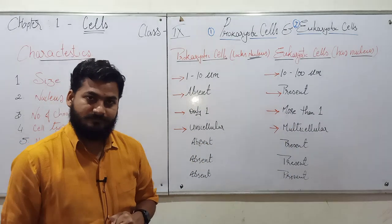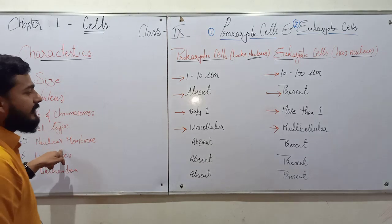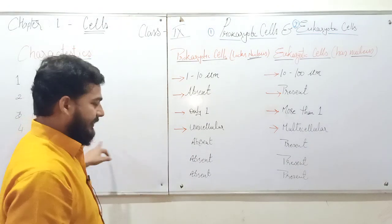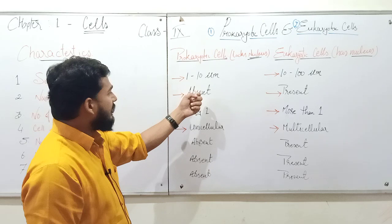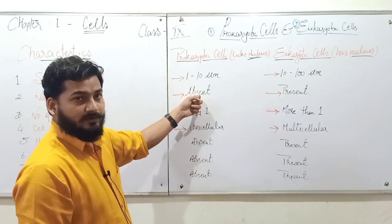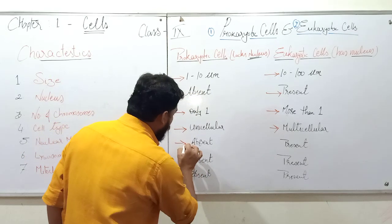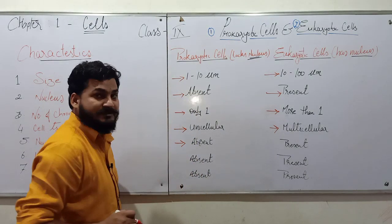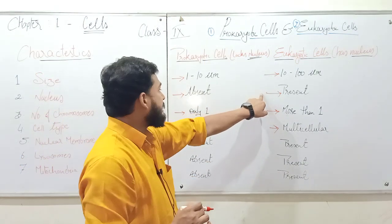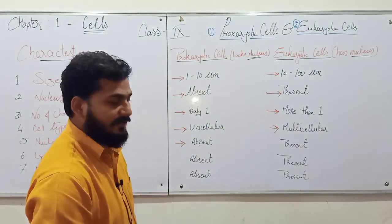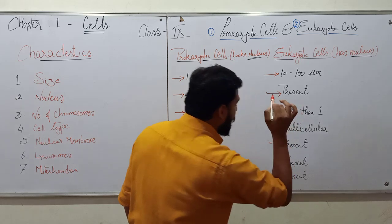Then we talk about nuclear membrane. Since the nucleus is not present or not developed in prokaryotic cells, nuclear membrane will also be absent. Since nucleus is present and well developed in eukaryotic cells, nuclear membrane will also be present.